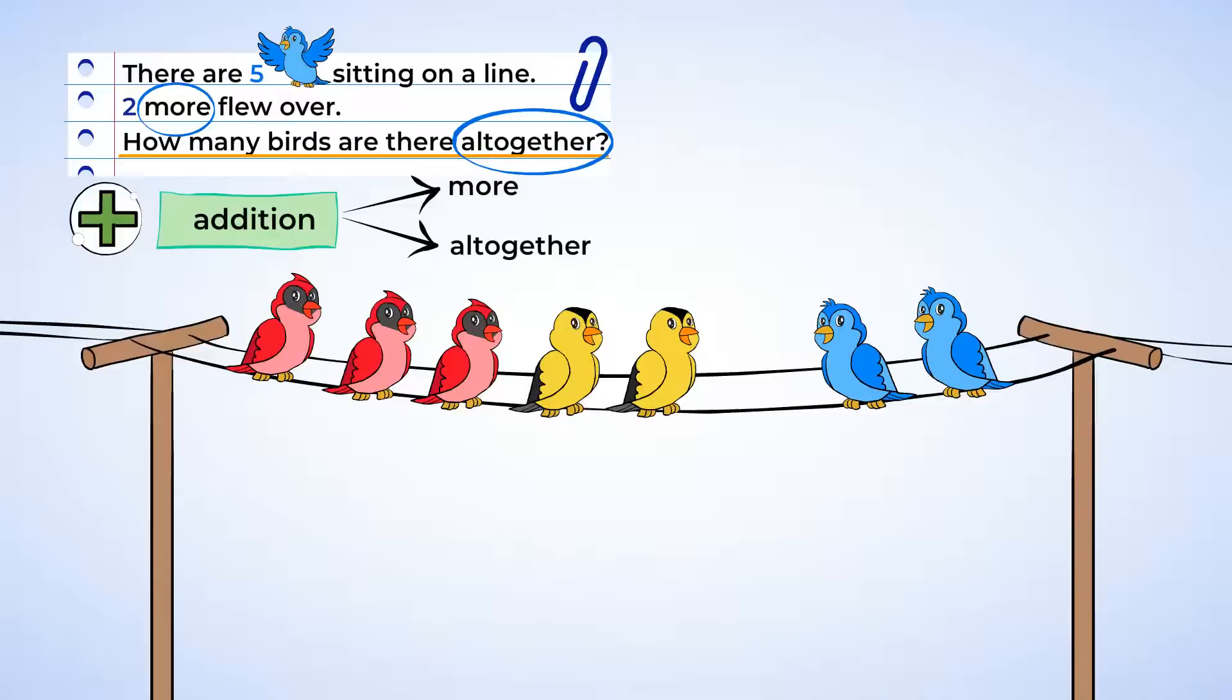Let's use our picture to help with the equation. We know we're adding, so we can write a plus sign. First, we know that there are five birds, so we're going to write a five.